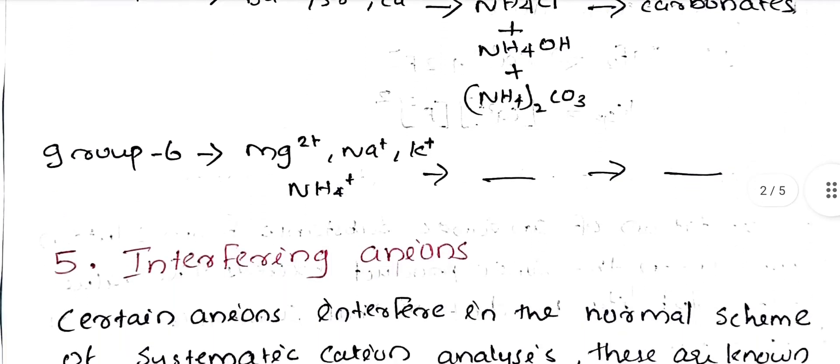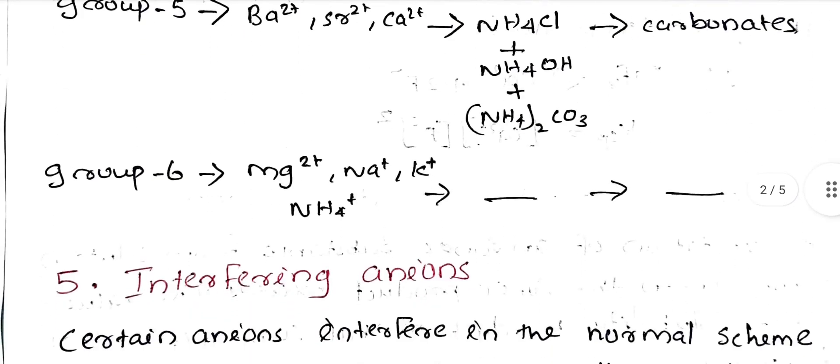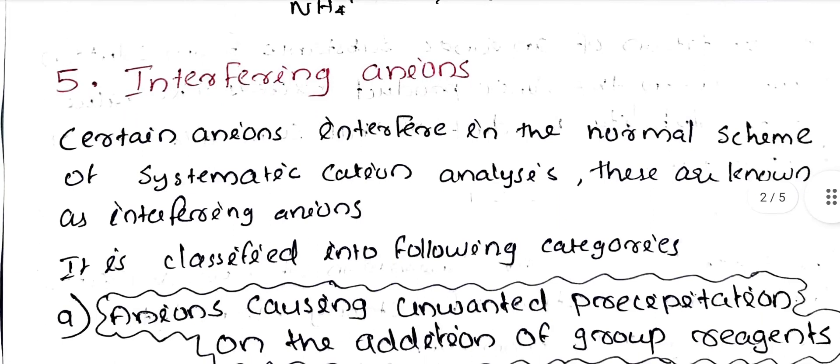Group 6 is magnesium, sodium, potassium, ammonium. These are the precipitations. This is the formula we have done in the lab.